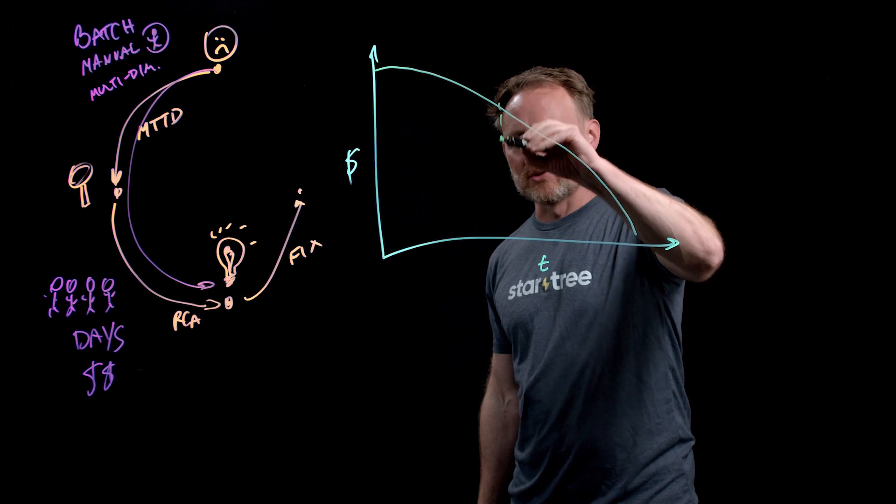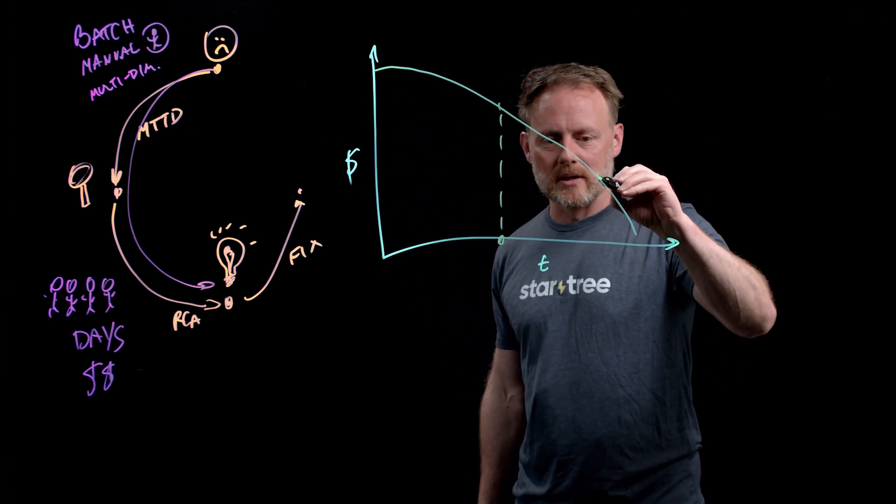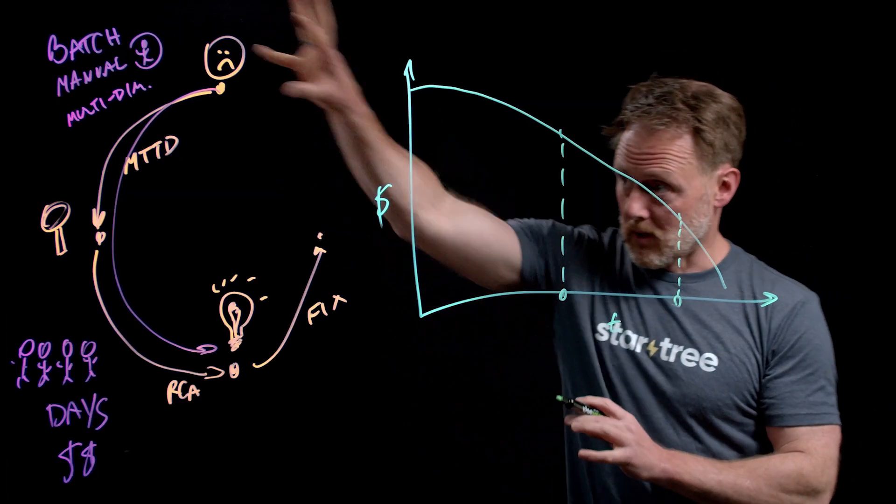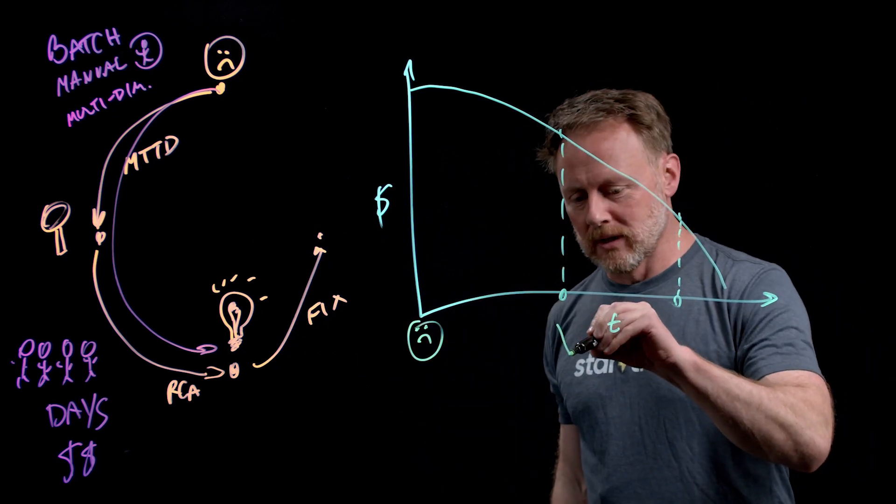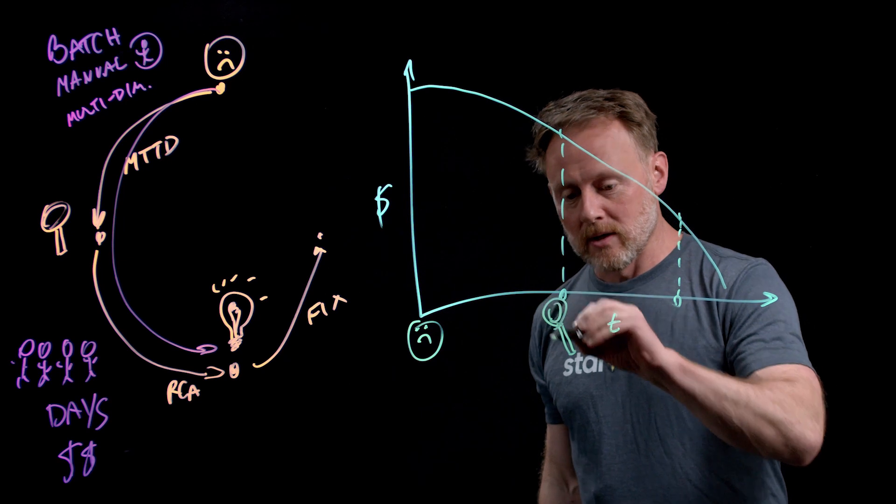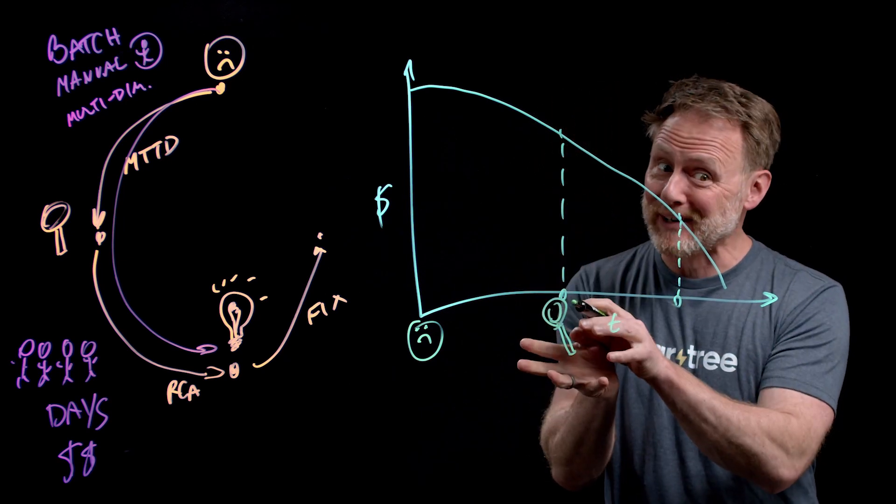And there are going to be these certain milestones here. So to bring in our points in the life cycle here, this of course is when something goes wrong in the world. This is when we become aware of it.